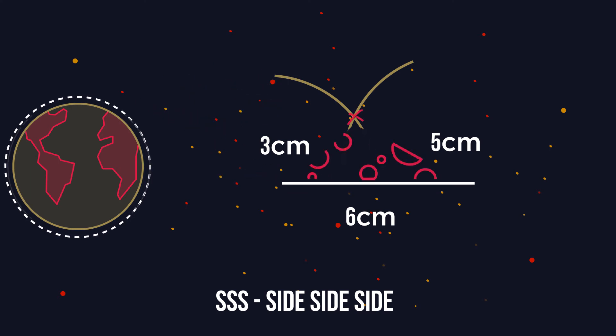So there we have a drawing of the asteroid. So to draw a triangle when you know all three sides you just need a ruler and a compass.